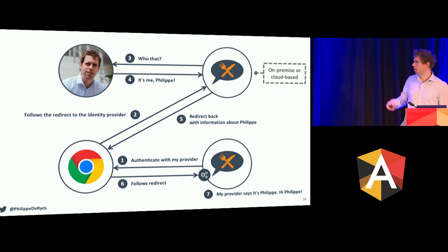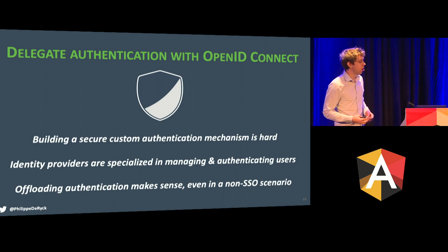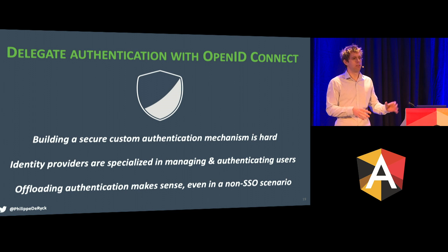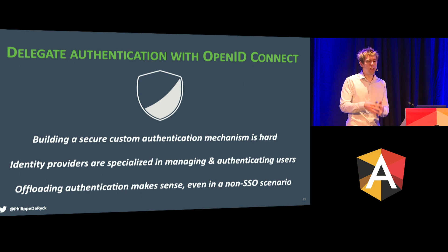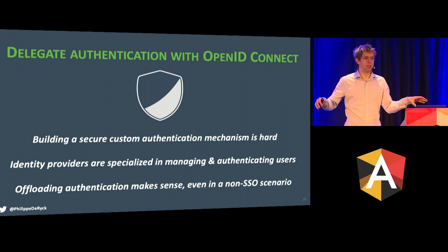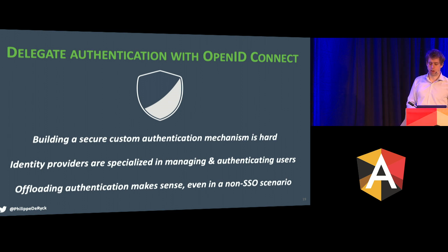That brings us to takeaway number one: you should delegate authentication to an identity provider with OpenID Connect. That's essentially the current best practice today, because that identity provider is going to be good at handling authentication. It should take care of all the technical details and implement protections against brute force attacks and credential stuffing. You don't want to keep re-implementing authentication over and over again. Do it one time, centrally, and use that for your applications.